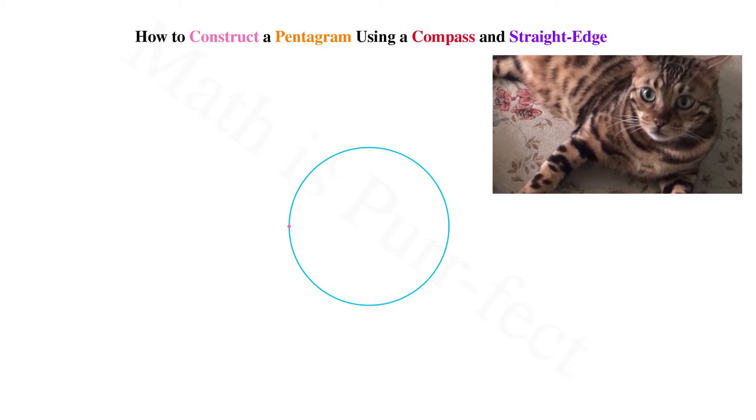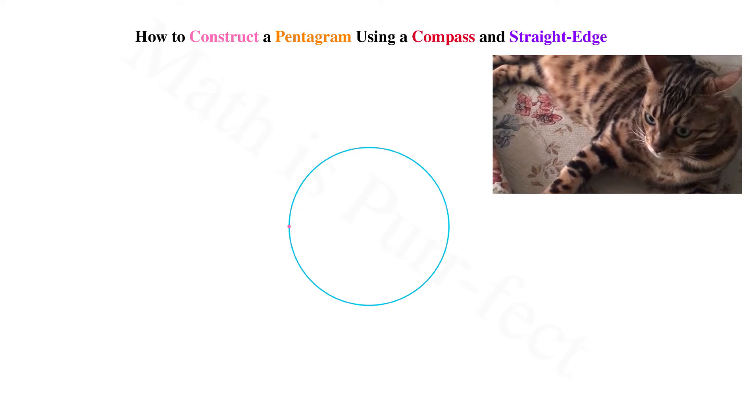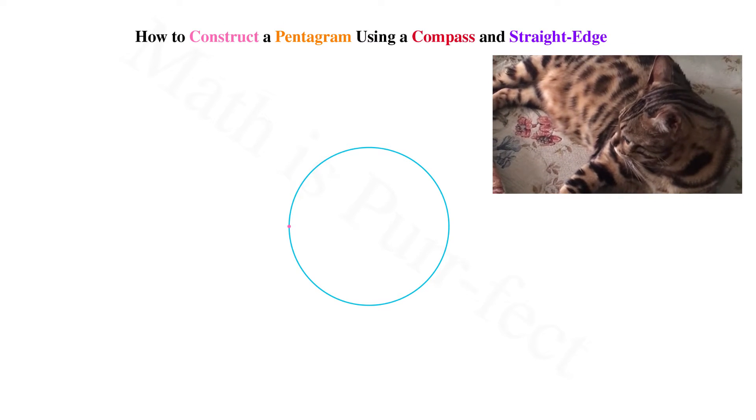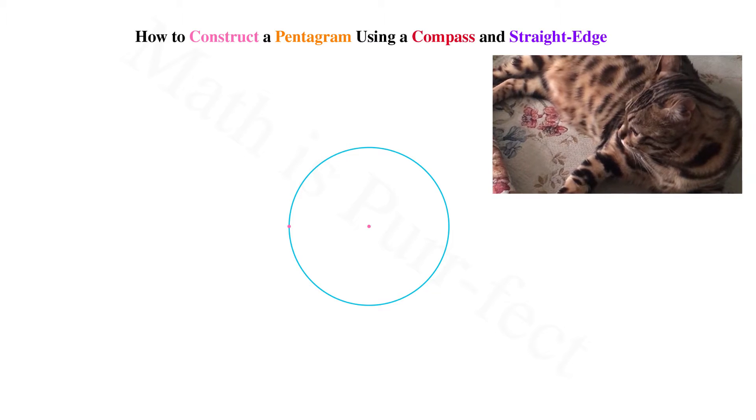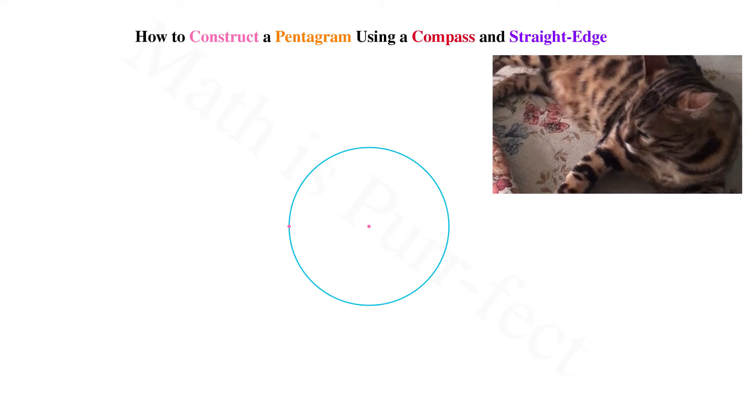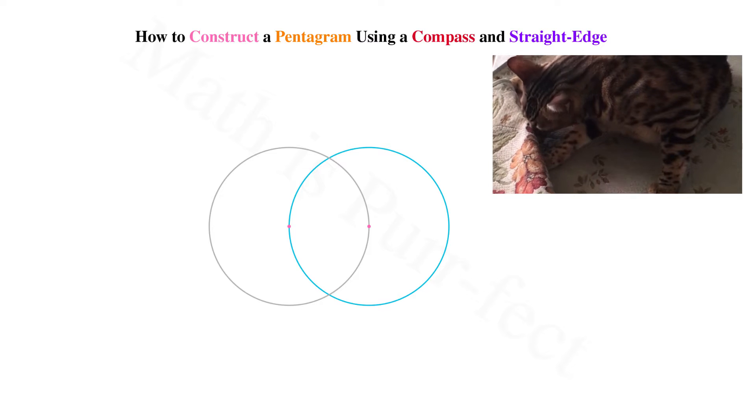Place your compass at any point on the circumference of the circle and check that it has the same radius as before by intersecting the center of our circle with the pencil. Now draw a second circle through the center of the first.